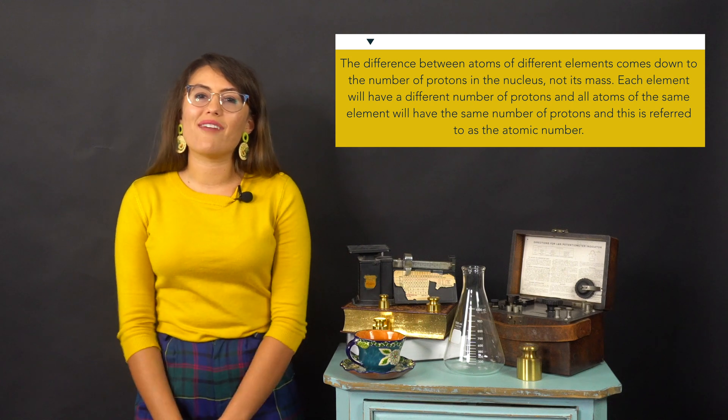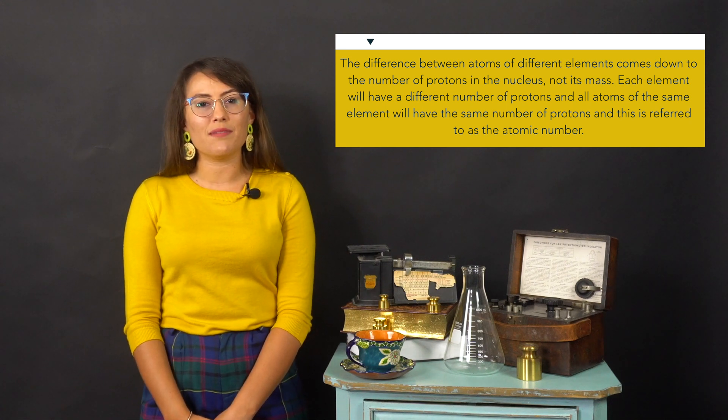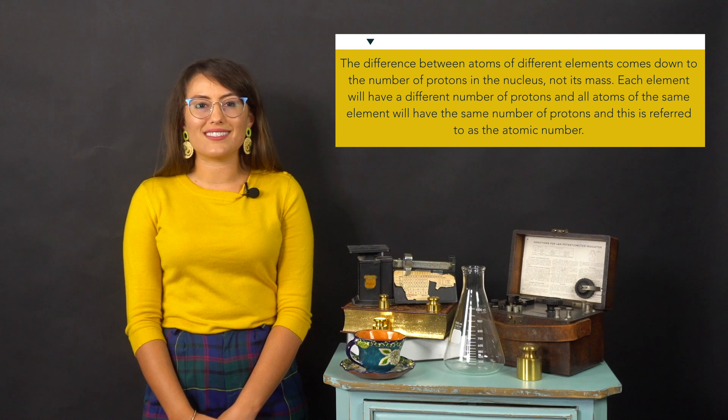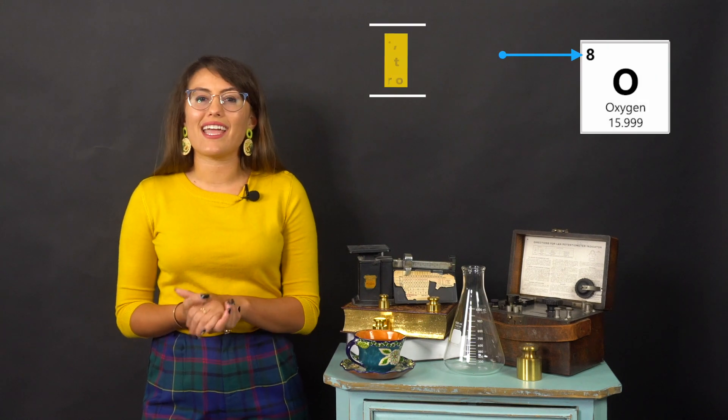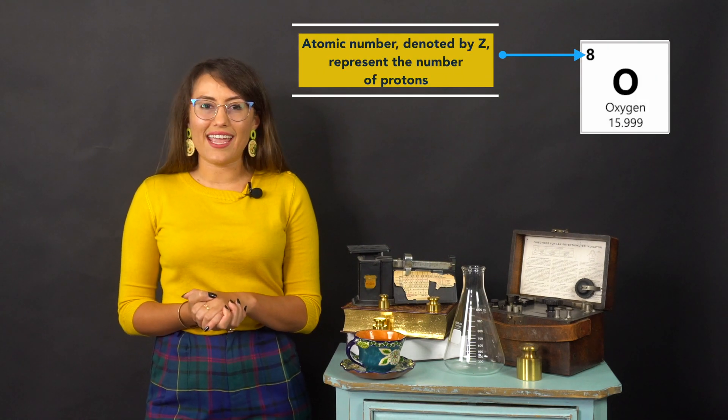Each element will have a different number of protons and all atoms of the same element will have the same number of protons, and this is referred to as atomic number. For example, oxygen has an atomic number of 8, meaning every atom of oxygen has 8 protons.